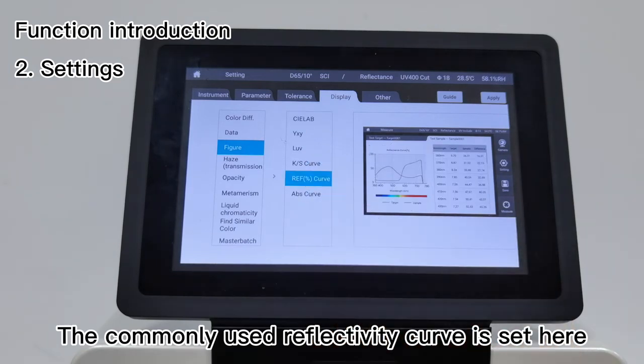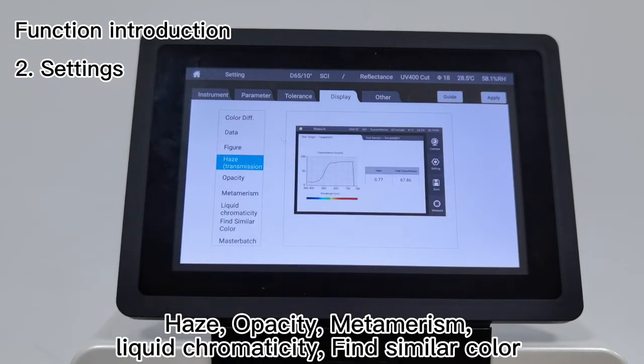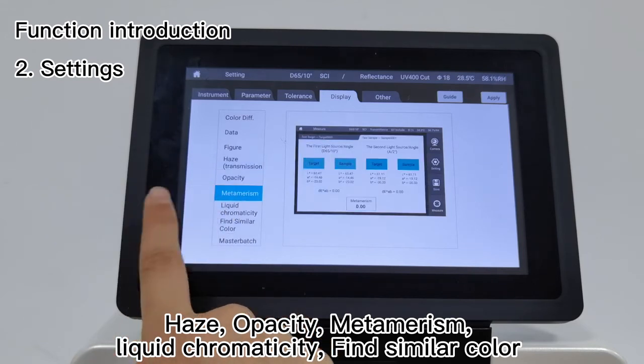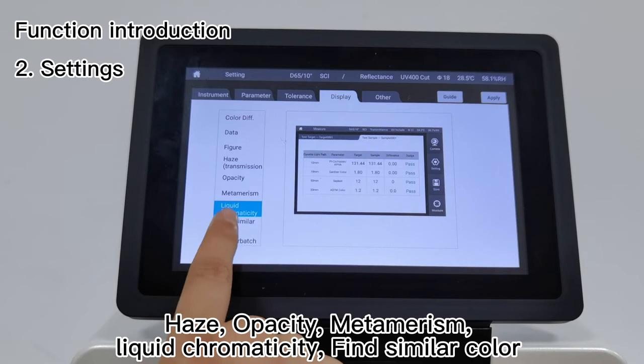The commonly used reflectivity curve is set here. Other features include haze, opacity, metamerism, liquid chromaticity, find similar color, and master batch.